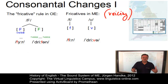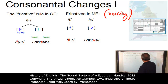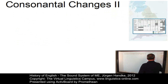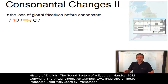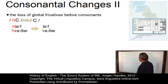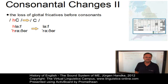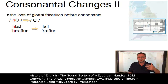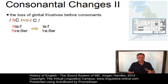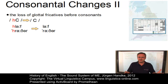Over and above these changes in the inventory of consonantal phonemes, further consonantal changes occurred during the Middle English period. The first is the loss of glottal fricatives before consonants. Examples include 'hlæhhan', which became 'laugh', and 'hrather', which became 'rather'. There are some environments where this did not take place — for example, the WH environment, where the glottal fricative survived even until the present day in some varieties of English; some people still say 'which' or 'where'.